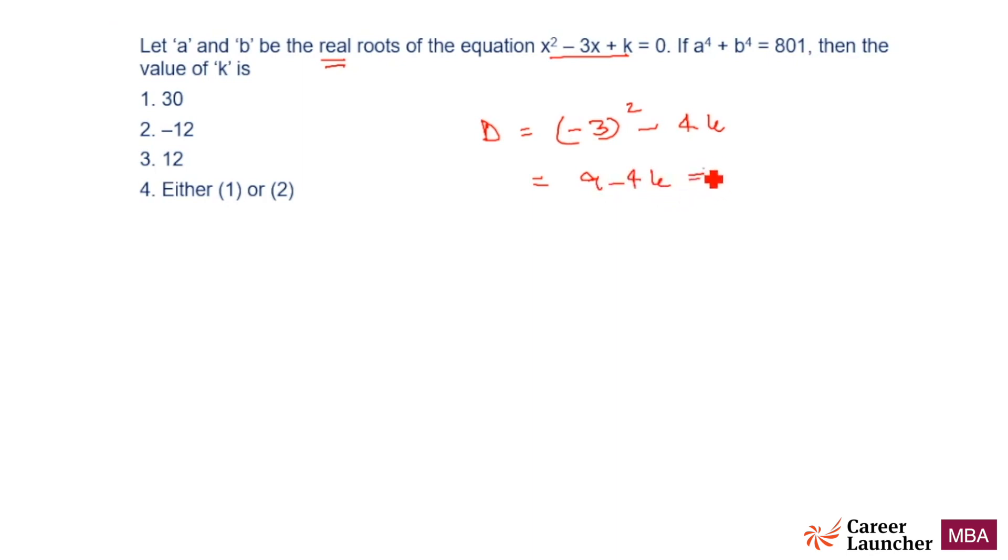Now what does that mean? That means discriminant should be greater than or equal to 0 for the roots to be real. If this has to be greater than or equal to 0, that means 9 should be...